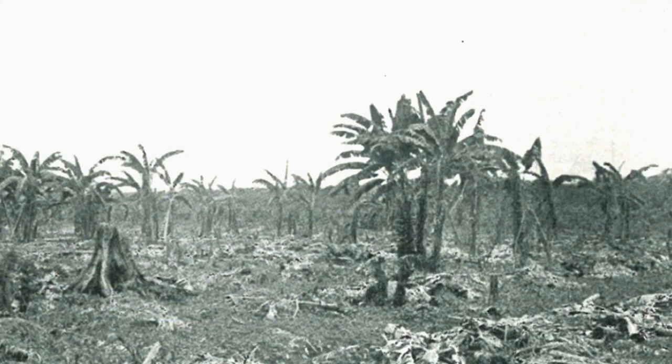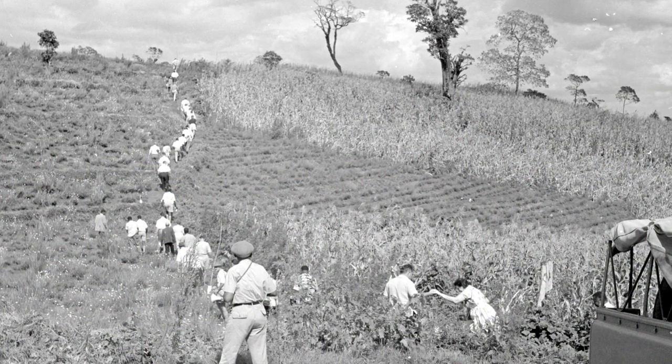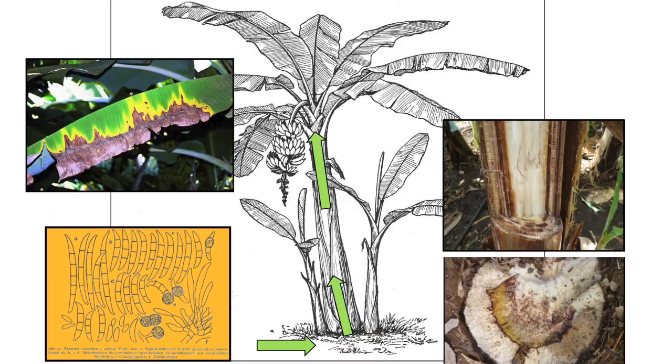It was first identified or discovered in Australia in a botanical garden near Brisbane by a medical doctor, but then it started to cause real damage when it was again discovered in Central America, in Panama and Costa Rica, where it caused severe damage to export bananas at that stage.